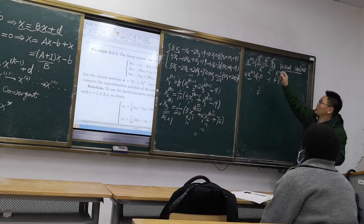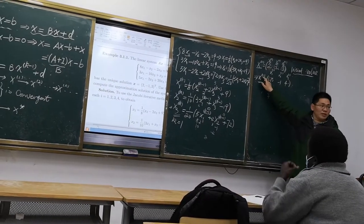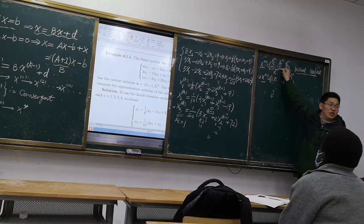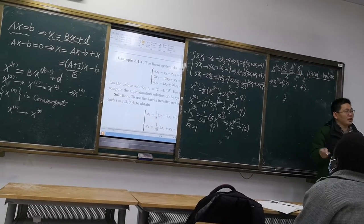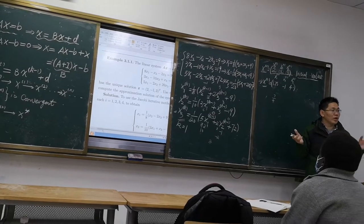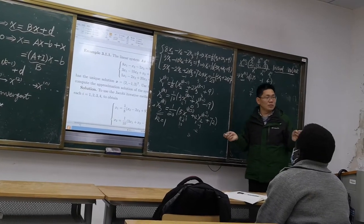You should use the x0 to get x1. But this, this initial value, you can choose every number, every value. It's random. It's random.